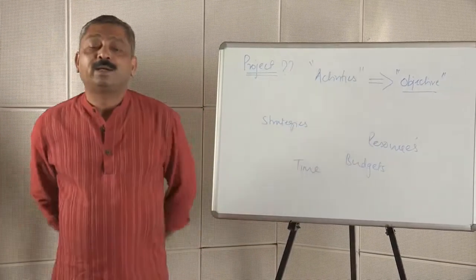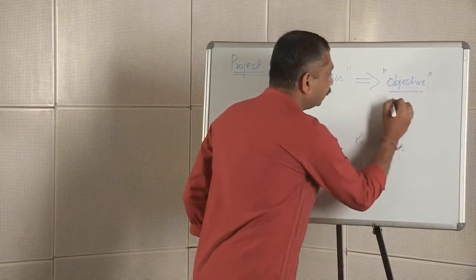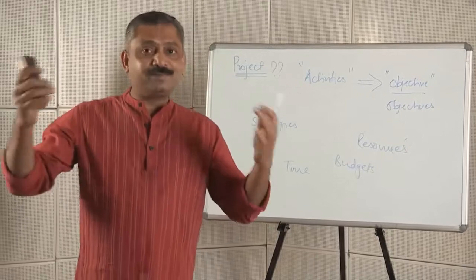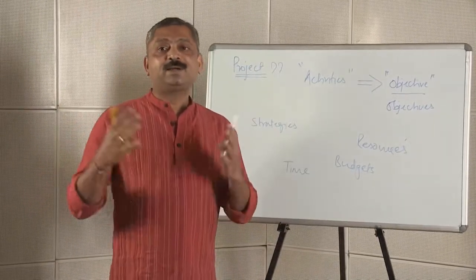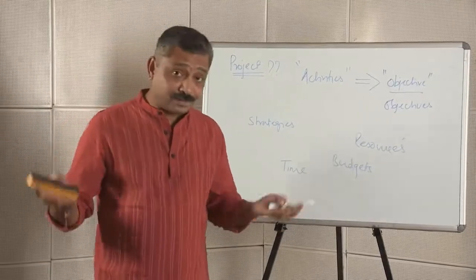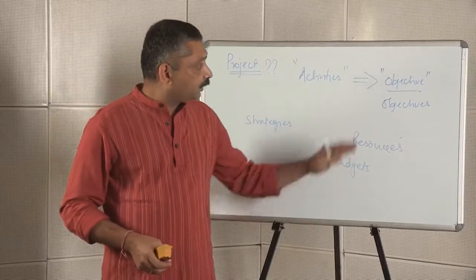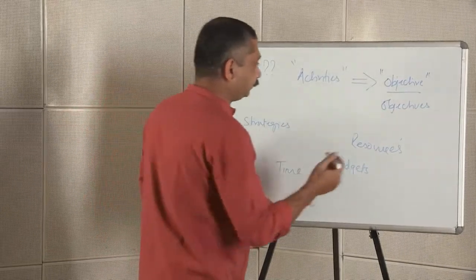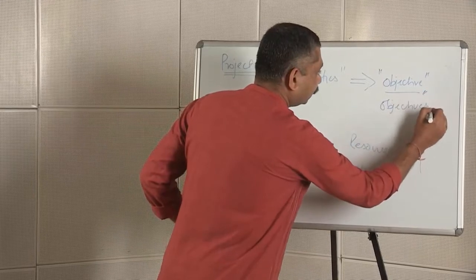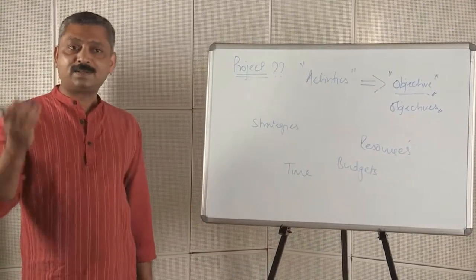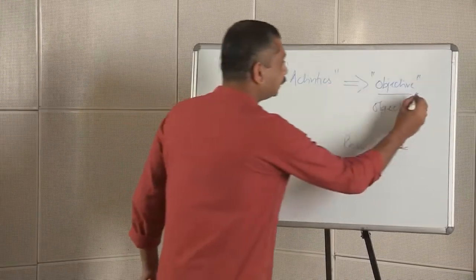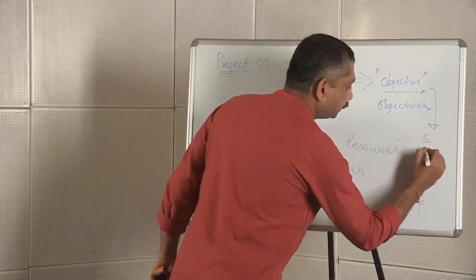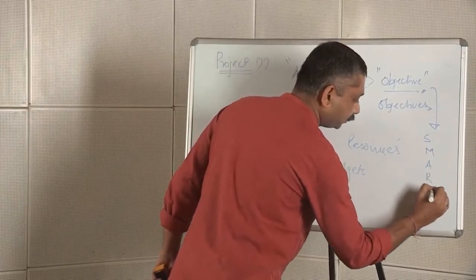One question you may ask: is it objective or objectives? Usually we find in projects that there are many objectives—a project may have 2, 3, 5, sometimes 10 objectives. Is there a difference between saying there is an objective versus objectives? Let me revisit the usual acronym we use: objectives should be SMART.